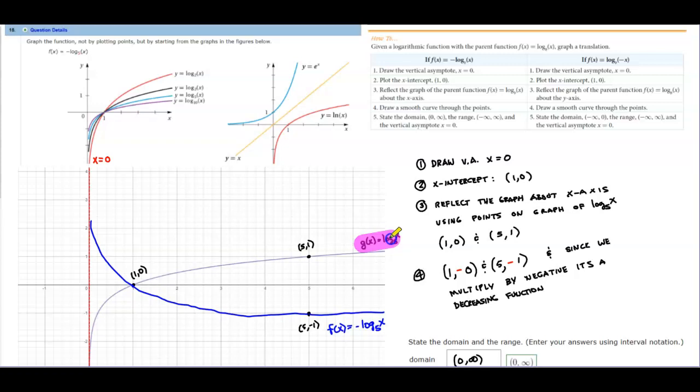So if you see here we've graphed this, and what we notice on that graph is that there are two ordered pairs. One of them is (1, 0) and the other one is (5, 1).